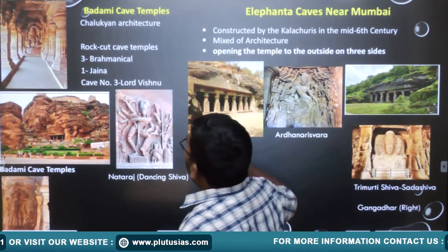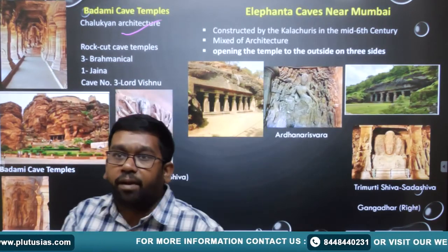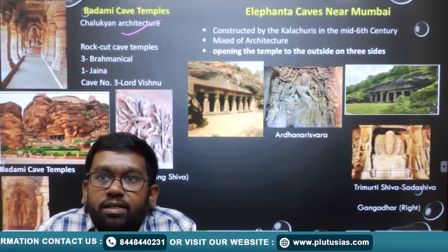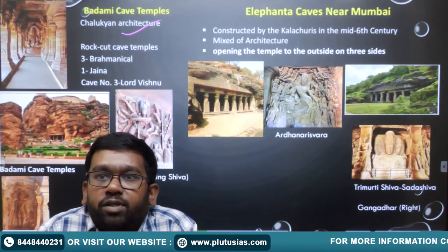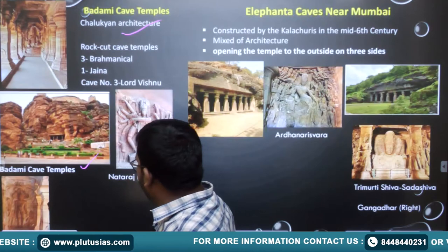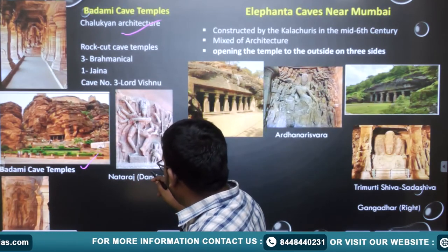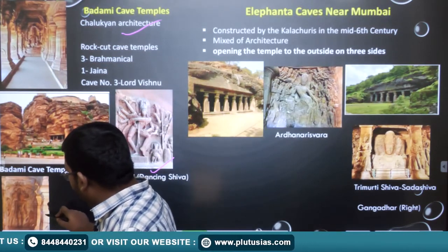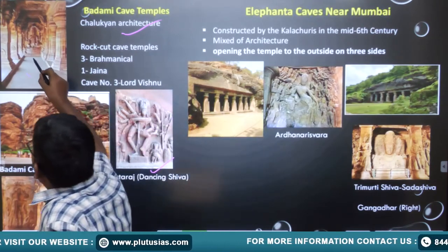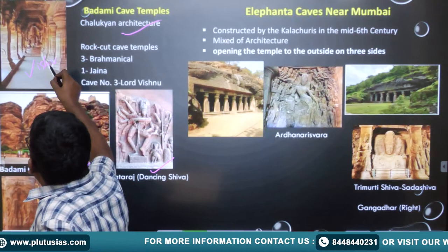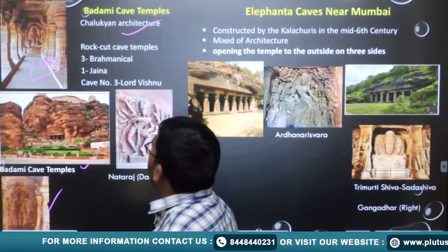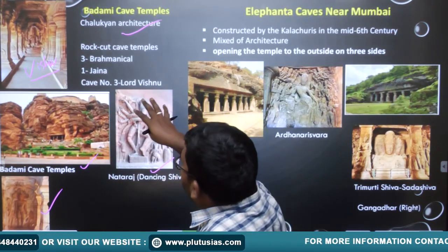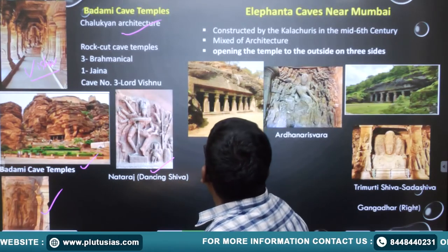Badami cave temples were made by the Chalukyas. This cave is famous because three Brahmanical traditions and one Jain tradition are found here. Lord Vishnu is depicted in this cave. Examples found include Nataraja — Shiva dancing — and a Tirthankar Parshvanatha statue. Badami cave temples are in Karnataka, representing Brahmanism and Jain traditions.